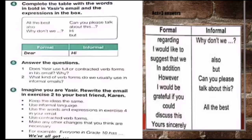Activity number five: does Yusuf use full or contracted verb forms in this email, and why? Answer: Yusuf uses full forms of verbs. Question two — what kind of verb forms do we usually use in informal emails? Answer: we usually use contracted forms of verbs in informal emails. Activity number six: imagine you are rewriting the email from exercise two to your best friend. Use informal language, use the words and expressions from exercise four, use contracted verb forms, and make any other necessary changes — for example, change 'everyone in grade 10 has' to 'we have all got.'